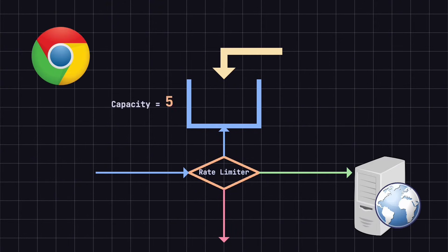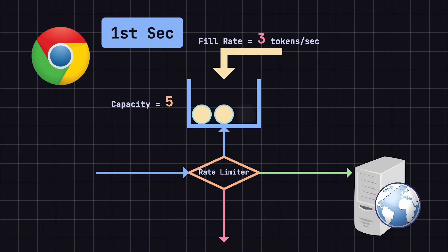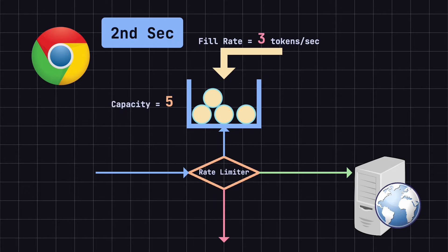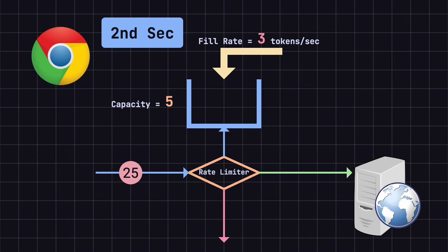Let's consider an example. Suppose we have a token bucket with a capacity of 5 tokens. The system generates 3 tokens per second, and each request consumes 1 token. At the start of the first second, the system generates 3 tokens, so the bucket now contains 3 tokens. A user makes 2 requests, and the system takes 2 tokens to handle these requests, leaving 1 token in the bucket. At the start of the second second, the system generates 3 more tokens, so the bucket now contains 4 tokens. The user makes 5 requests, and the system uses 4 tokens to handle the first 4 requests. However, since there are no tokens left, the 5th request is rejected.